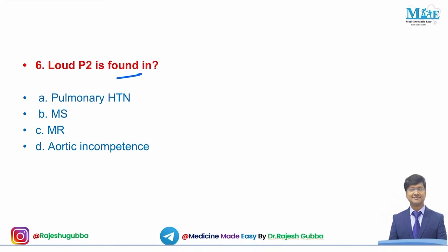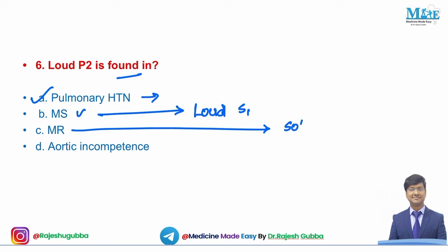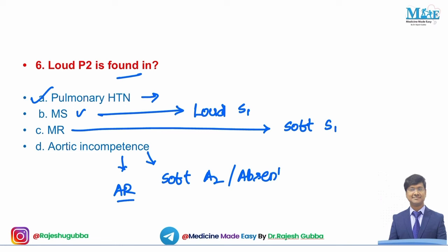Next question: loud P2 is found in — pulmonary hypertension, mitral stenosis, mitral regurgitation, or aortic incompetence. Loud P2 is heard in pulmonary hypertension. In mitral stenosis you have loud S1. In mitral regurgitation you have soft S1. In aortic incompetency (aortic regurgitation) you have soft or absent A2. So loud P2 is characteristic of pulmonary hypertension.